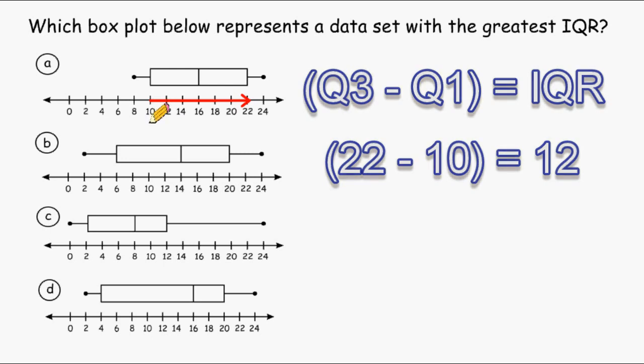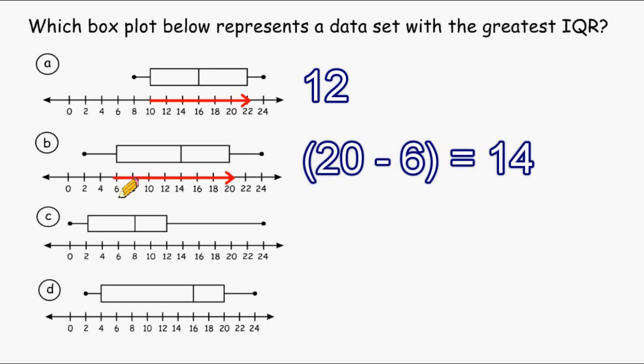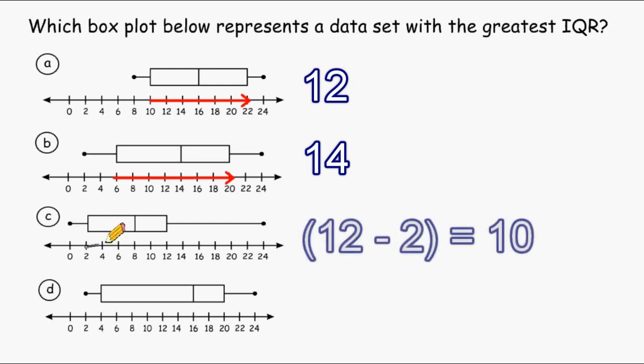For box plot B, Q1 starts at 6 and goes all the way to 20, and the difference of 20 and 6 is 14. For box plot C, Q1 starts at 2 and goes all the way to 12, and from 2 to 12, that is a distance of 10.